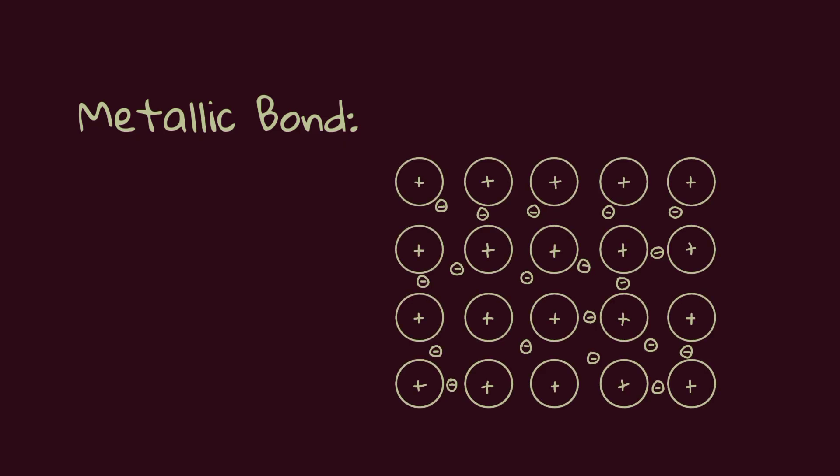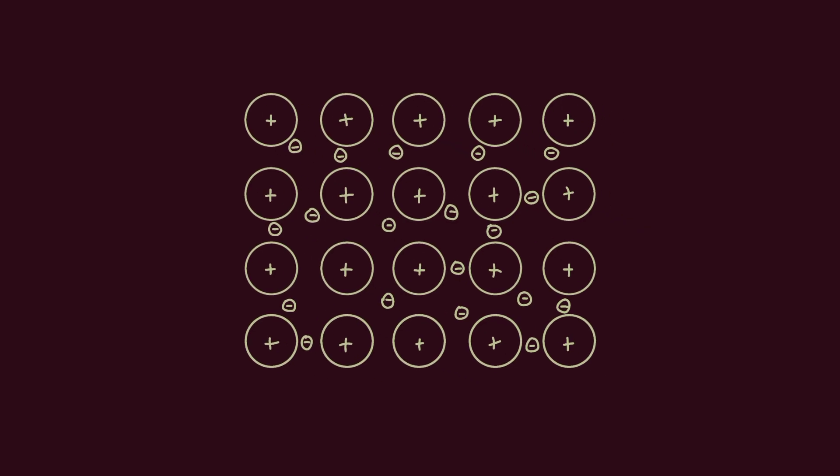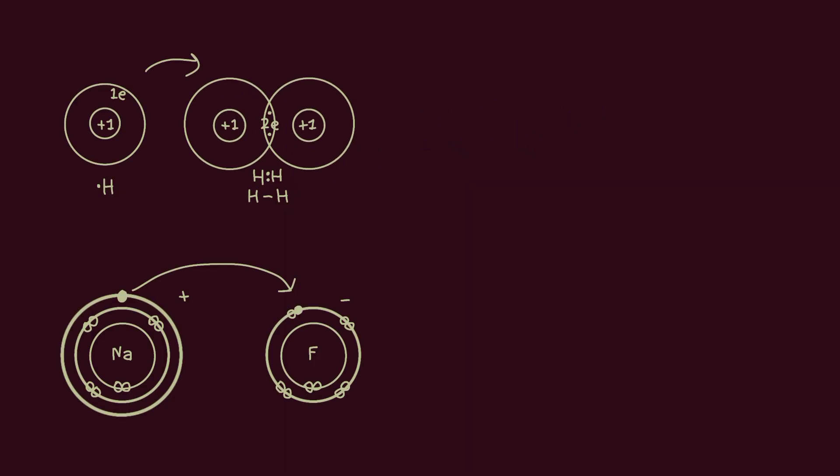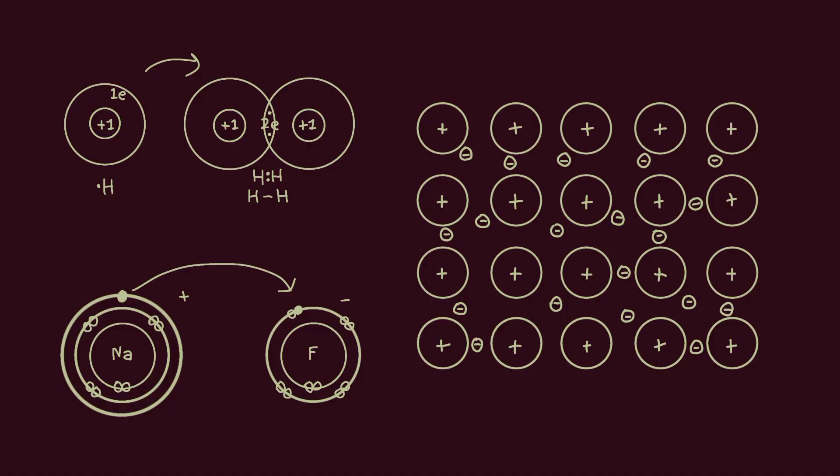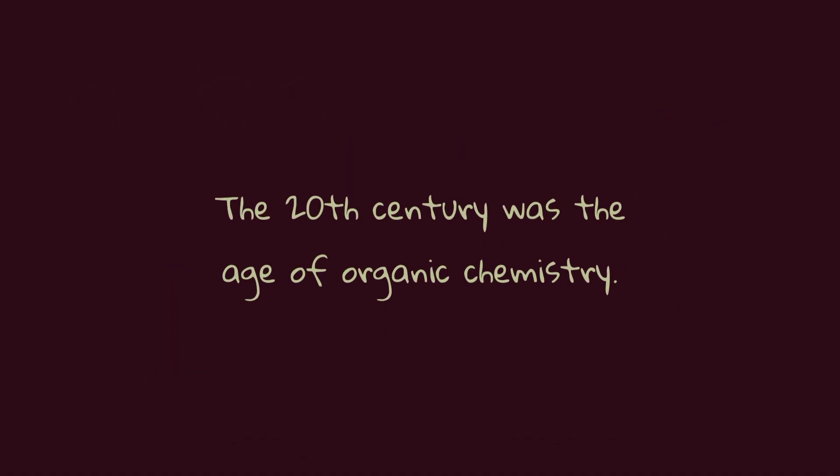Metallic bond occurs in metals where free electrons form an electron sea among positive metal ions. This explains why metals are good conductors of electricity and heat. These bonds allowed us to better understand how molecules come together to form complex structures.